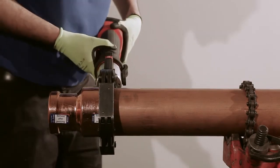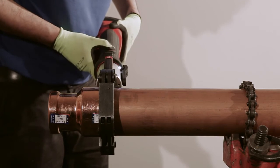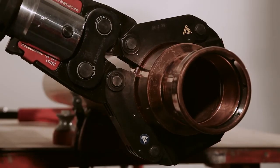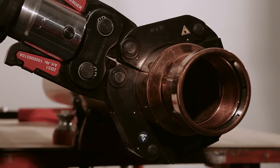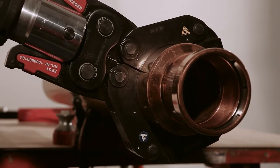Finally, check the mark you made for any movement between the tube and the fitting. Keeping hands clear of the press actuator, depress and hold the trigger of the tool until the press cycle is automatically completed.